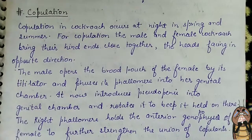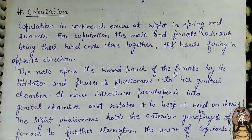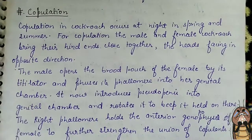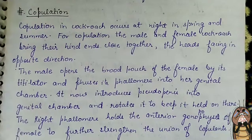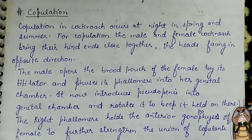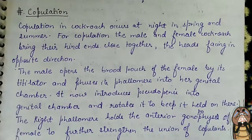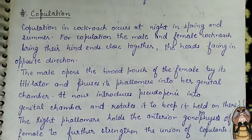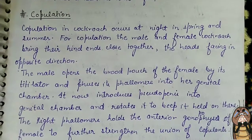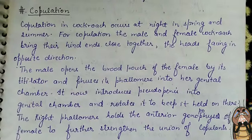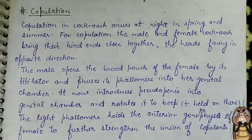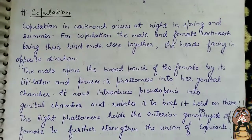For copulation, the male and female cockroach bring their hind ends close together. The hind end is closed, but the head is in the opposite direction.